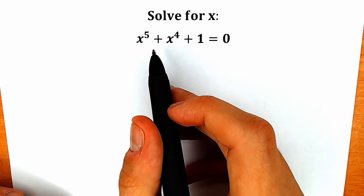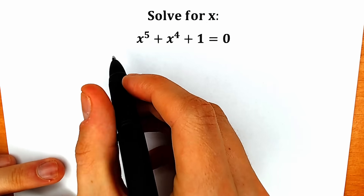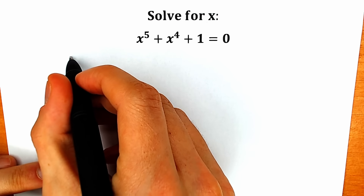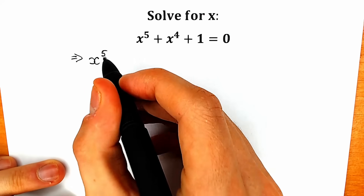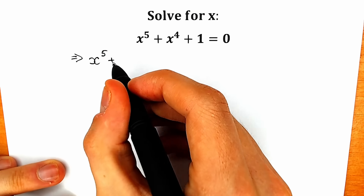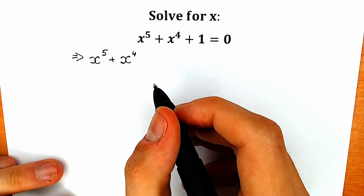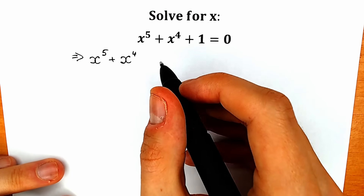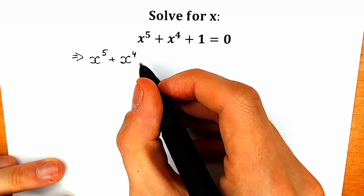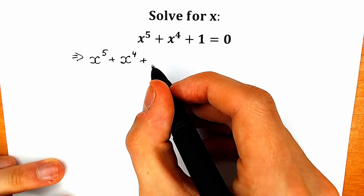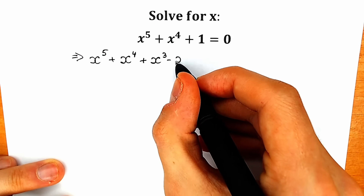First of all I'm going to show you a really interesting and tricky move. Let's try to rewrite this expression in another way. From the left side we have x to the fifth power plus x to the fourth power, and right now we don't have x to the third power. So I'm going to write a really tricky expression: plus x cube and minus x cube.